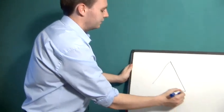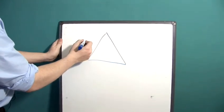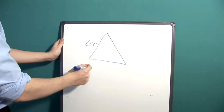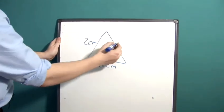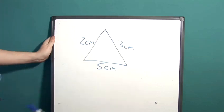We've got this triangle. It has a side length of two centimetres here, five centimetres here, and even though it may not look like it, let's say it's got a side length of three centimetres here.